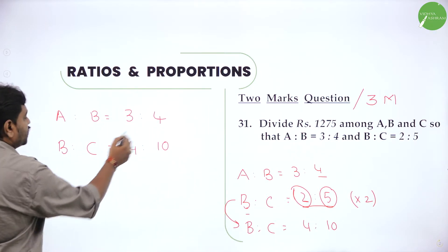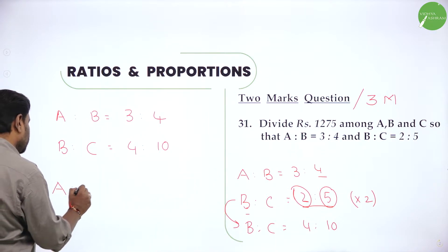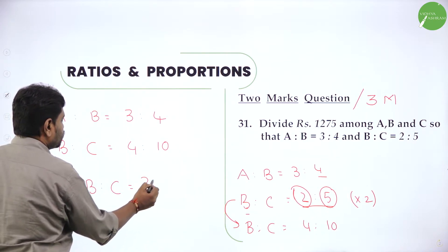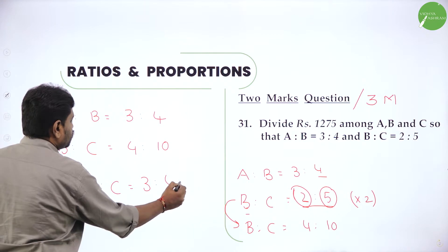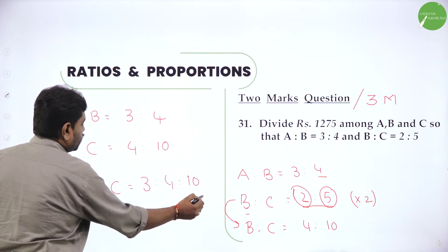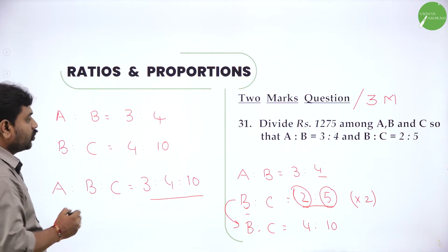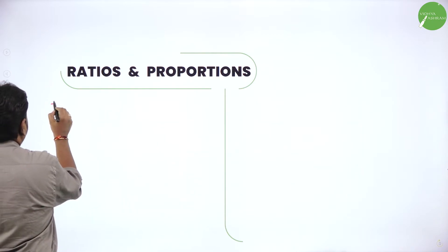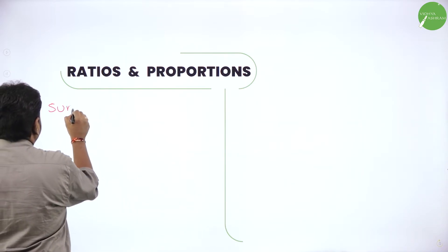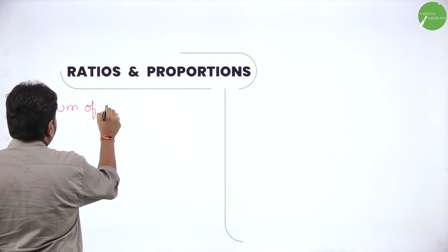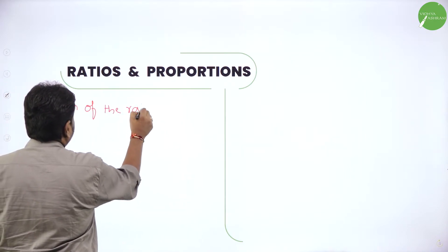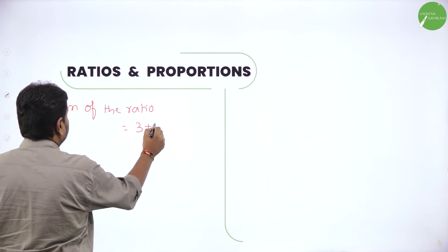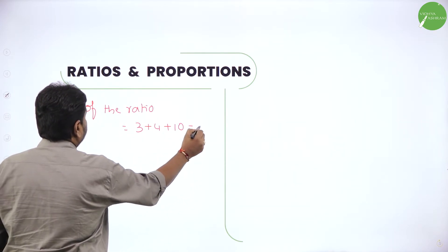So now you can see B is same. So directly write A is to B is to C. What is A value? 3. What is B value? 4. What is C value? 10. So A is to B is to C is 3 is to 4 is to 10. Now going to divide. First find sum of the ratio: 3 plus 4 plus 10, that gives you 17.